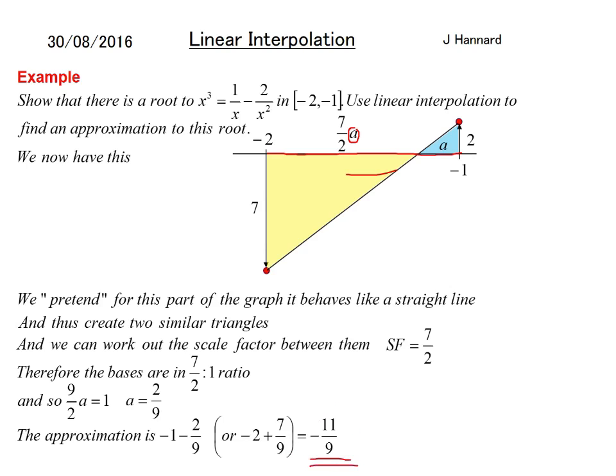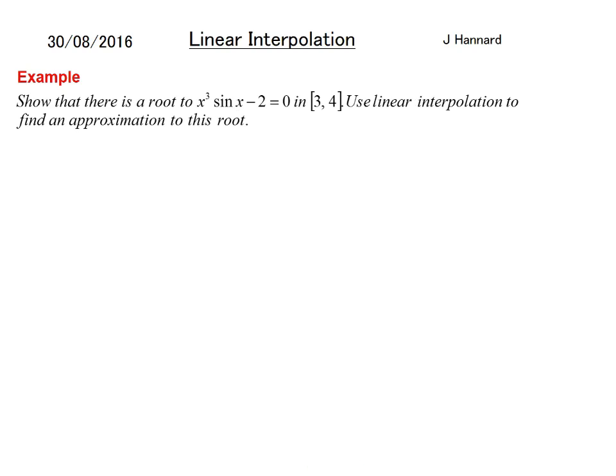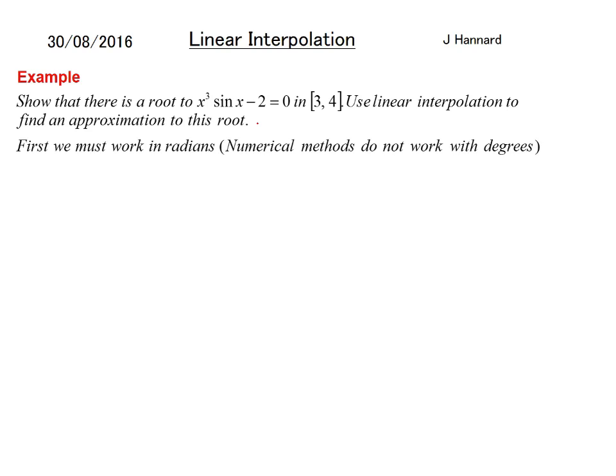Here's another one: show that there is a root to f(x) = x³ sin(x) - 2 in the interval [3, 4], and use linear interpolation to find an approximation to this root. First, we must work in radians because numerical methods do not work with degrees - at a higher level you'll be using radians a lot more.